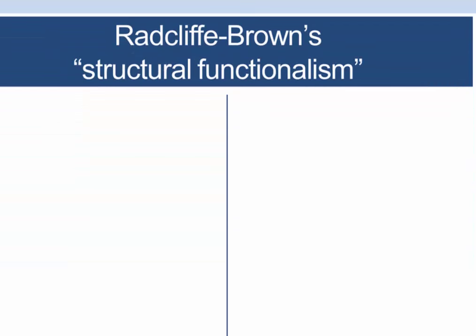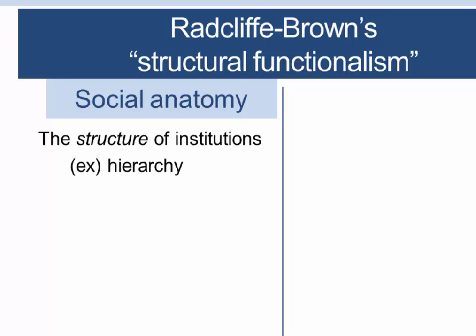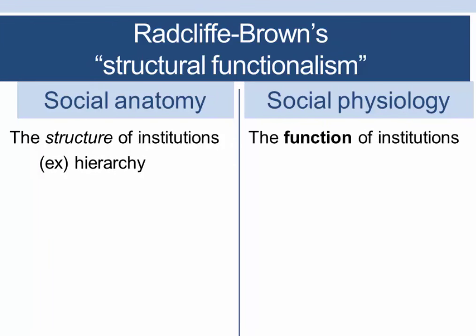In anthropology this was perhaps given its clearest formulation in the middle of the 20th century by an anthropologist named Alfred Reginald Radcliffe-Brown, and he called his approach structural functionalism. On the structural side he talked about social anatomy, which described the structure of institutions in a society. An easy example would be a hierarchical structure with individuals of different levels of power. He also talked about social physiology, which referred to the functions of those institutions within the society — for example, the function of hierarchy is to create social order.